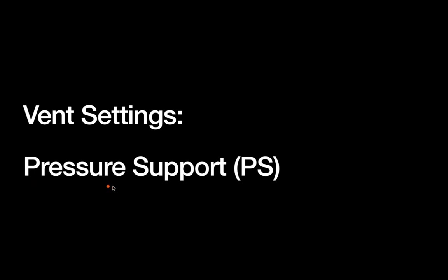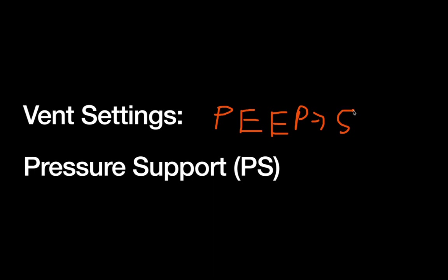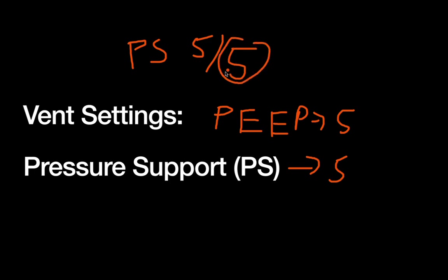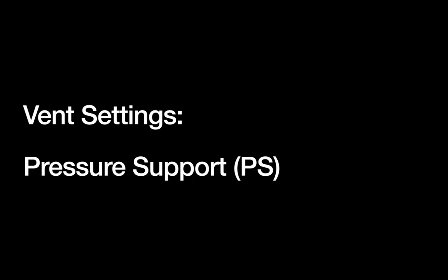The first vent setting is pressure support, often abbreviated PS. This is the most basic setting — almost like CPAP — where there's a baseline PEEP, often set to five, and then with each breath the ventilator provides a little additional pressure support, also often set to five. So pressure support five over five means a baseline PEEP of five with an additional support of five given to each breath. This is typically used when doing spontaneous breathing trials.